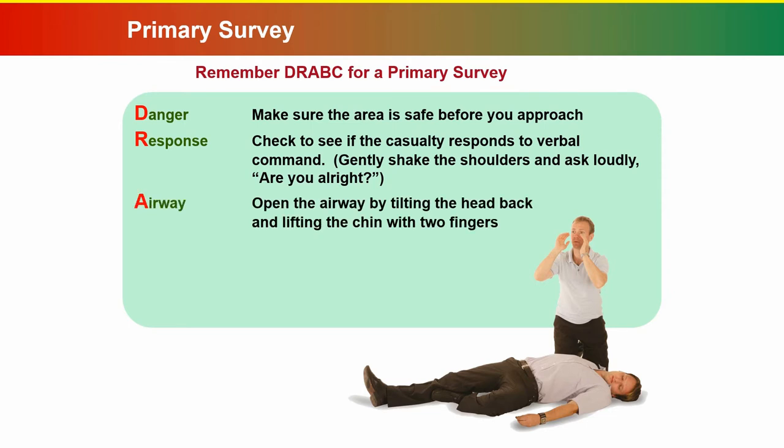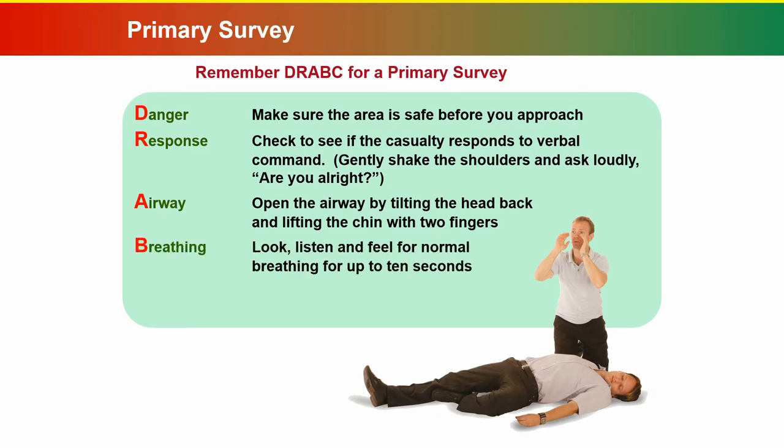Then Airway: open the airway by tilting the head back and lifting the chin with two fingers. B is Breathing: look, listen and feel for normal breathing for up to 10 seconds. And lastly, C is Circulation: check for major bleeding and treat accordingly.